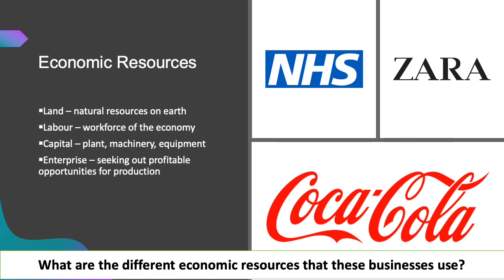You should have a good idea of examples for those businesses. For Zara, land could be cotton used to make their goods. For Coca-Cola, land could be sugar or water. For labour, for both, you could have people working in the production plants. For enterprise, the creation of new products — for Coca-Cola that could be Coca-Cola Life, and for Zara it could be any new product that had been created.